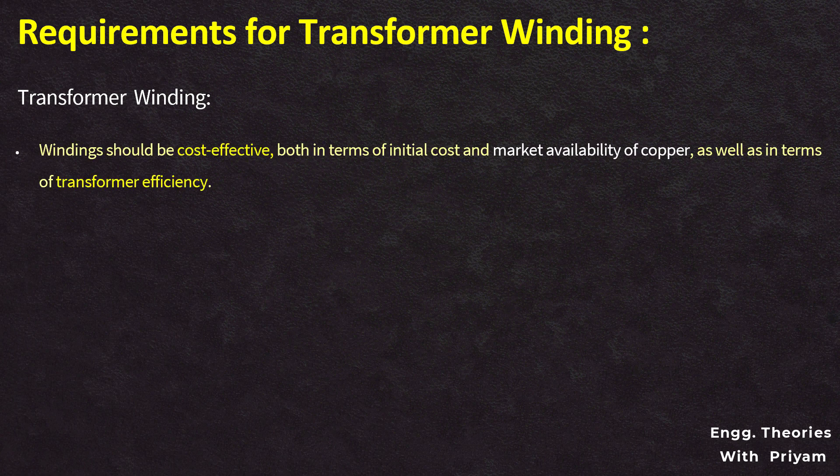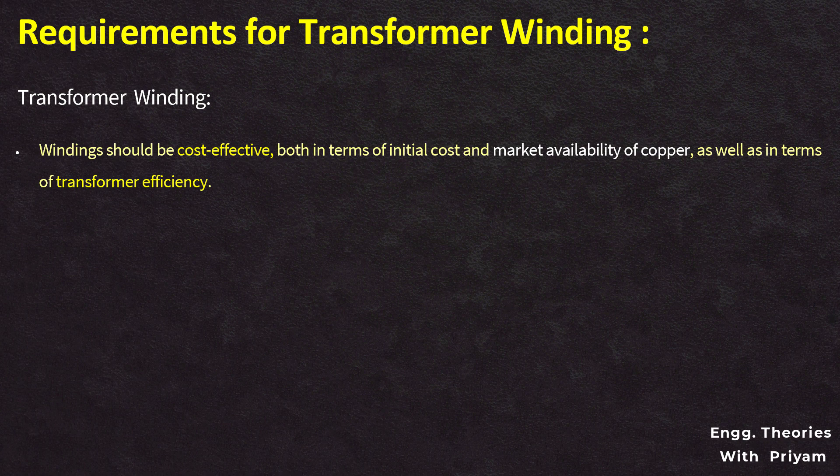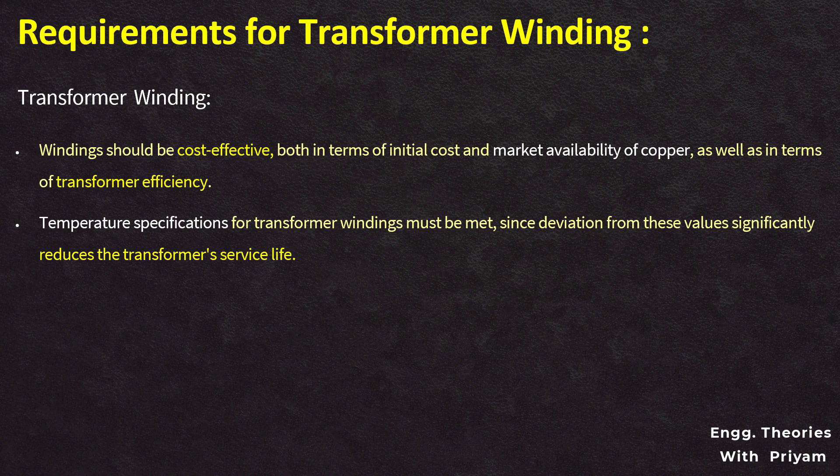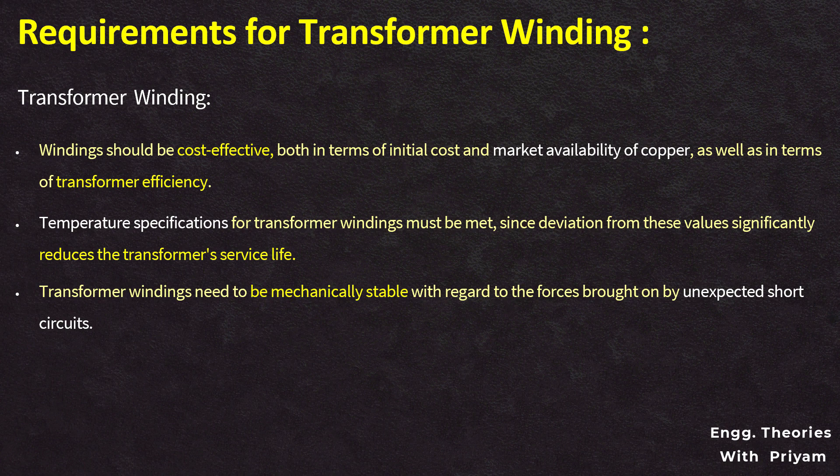Windings should be cost-effective, both in terms of initial cost and market availability of copper, as well as in terms of transformer efficiency. Temperature specifications for transformer windings must be met since deviation from these values significantly reduces the transformer's service life. Transformer windings need to be mechanically stable with regard to the forces brought on by unexpected short circuits.